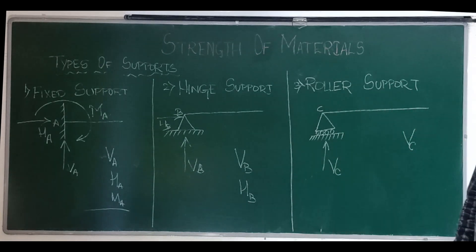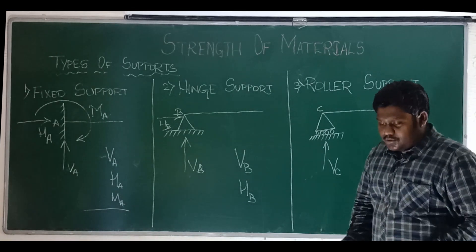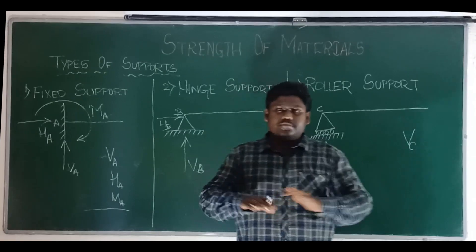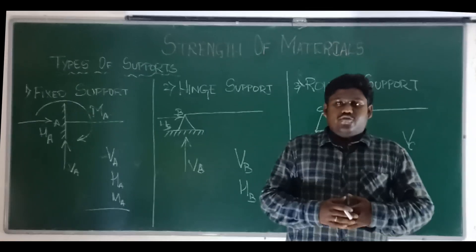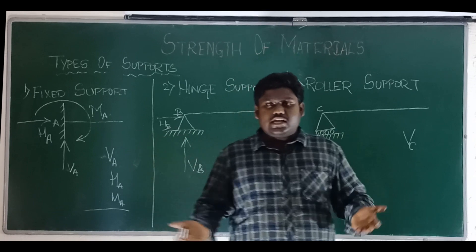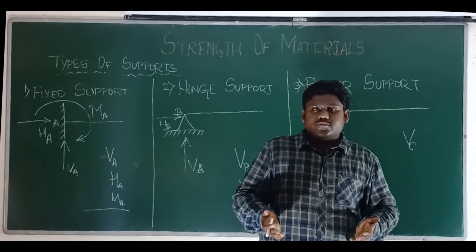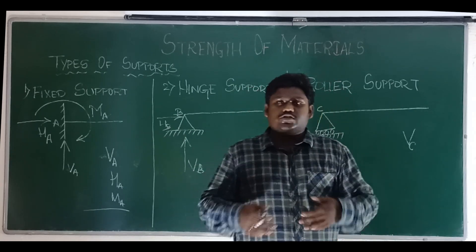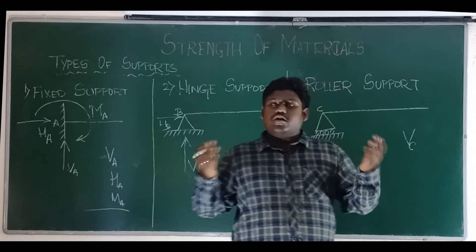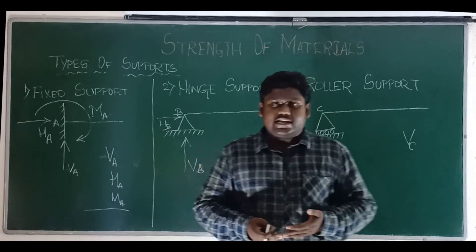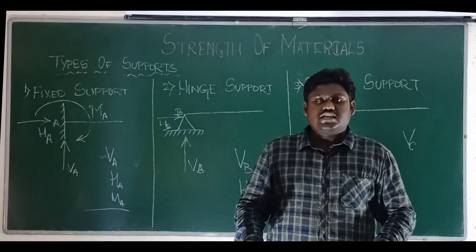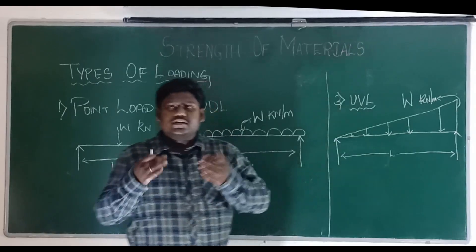The last type is the free end. As the name suggests, it is completely free — you have freedom to move in any direction, both translating motions and rotational motion. Since there is no restriction in all three directions, the number of reactions for a free end is zero.